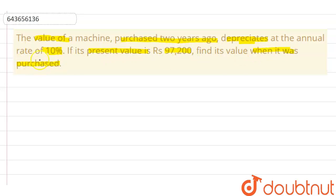As the question states, the machine purchased two years ago depreciates at the annual rate of 10%. This means the rate R equals -10%. The negative sign is due to the word depreciate. If its present value is Rs 97,200, we have to find its value when it was purchased.